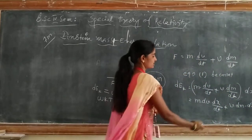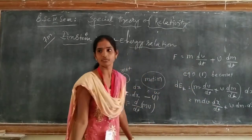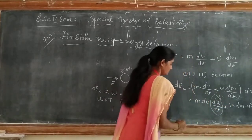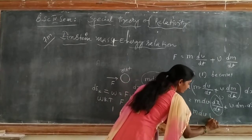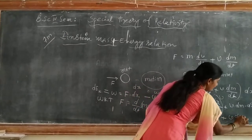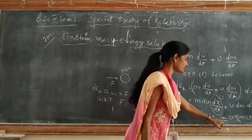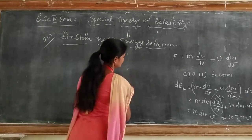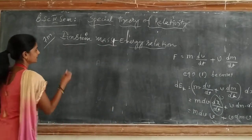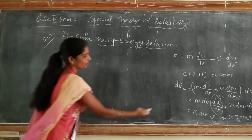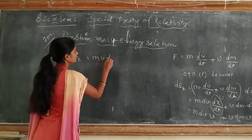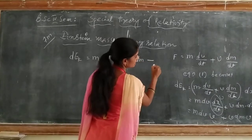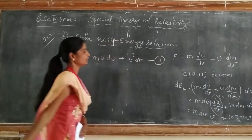Since dx/dt is nothing but velocity v, we get dEk = M·v·dv + V²·dm. This is equation number 2.